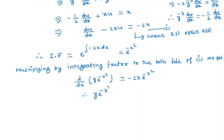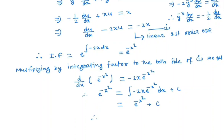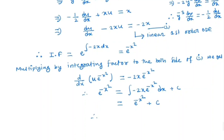Multiplying through, we have u · e to the power minus x² equals the integral of minus 2x · e to the power minus x² dx plus C. Since the derivative of minus x² is minus 2x, this integral evaluates to e to the power minus x².